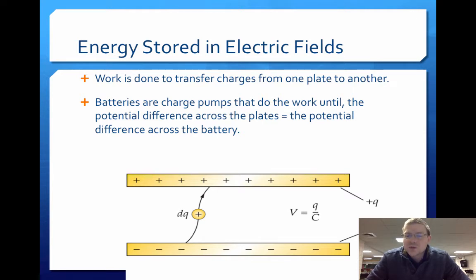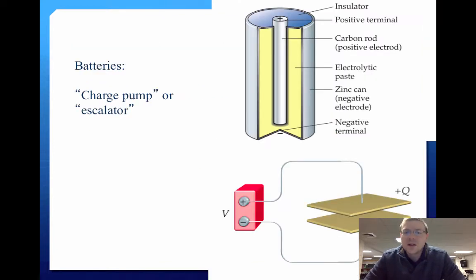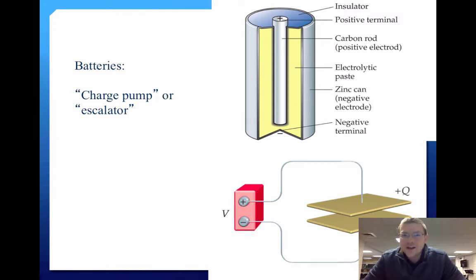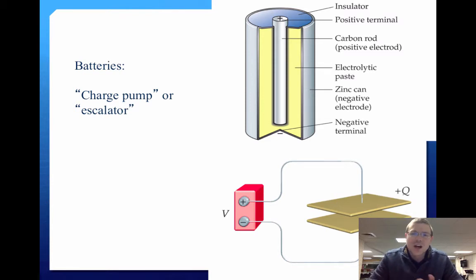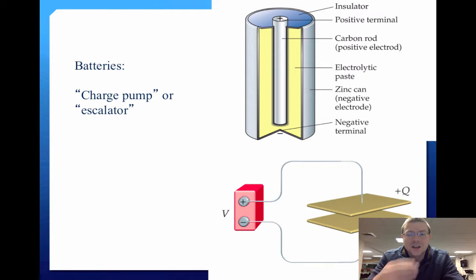Remember that in order to charge plates, something has to do work and push charges and transfer charge from one plate to the next. Batteries, you can think of as pumps — they will do work until the potential difference across the plates is equal to that of the battery. There's a carbon rod that goes down the middle, an electrolyte paste on the inside, and some zinc. The chemical reaction between the zinc and the electrolyte paste creates a potential difference, piling up charges at one end, leaving one end positive and one end negative.